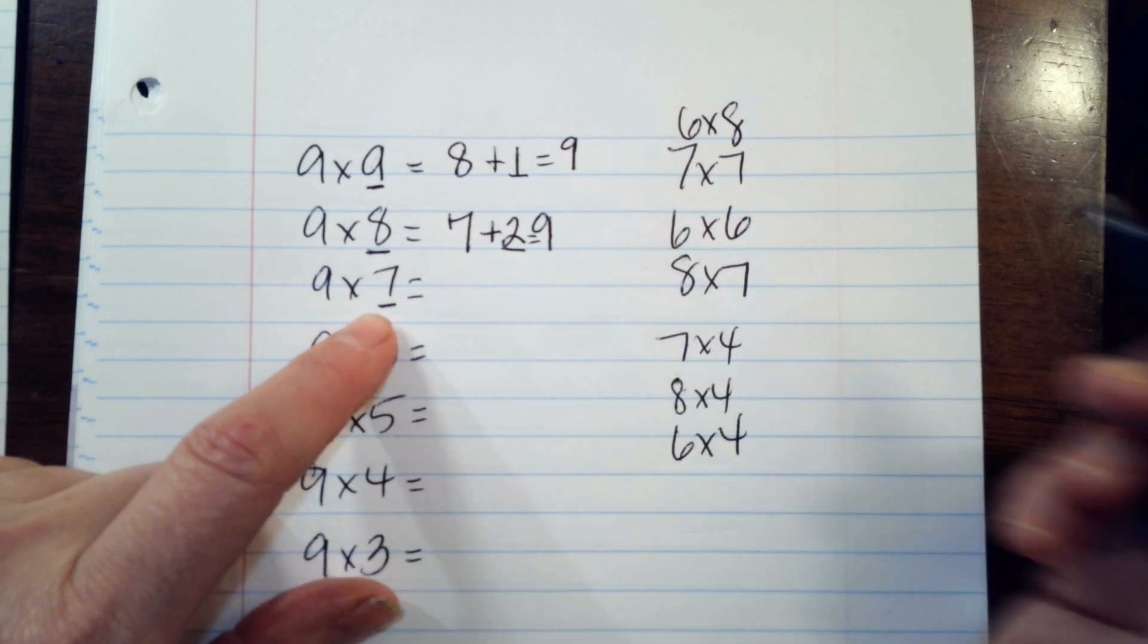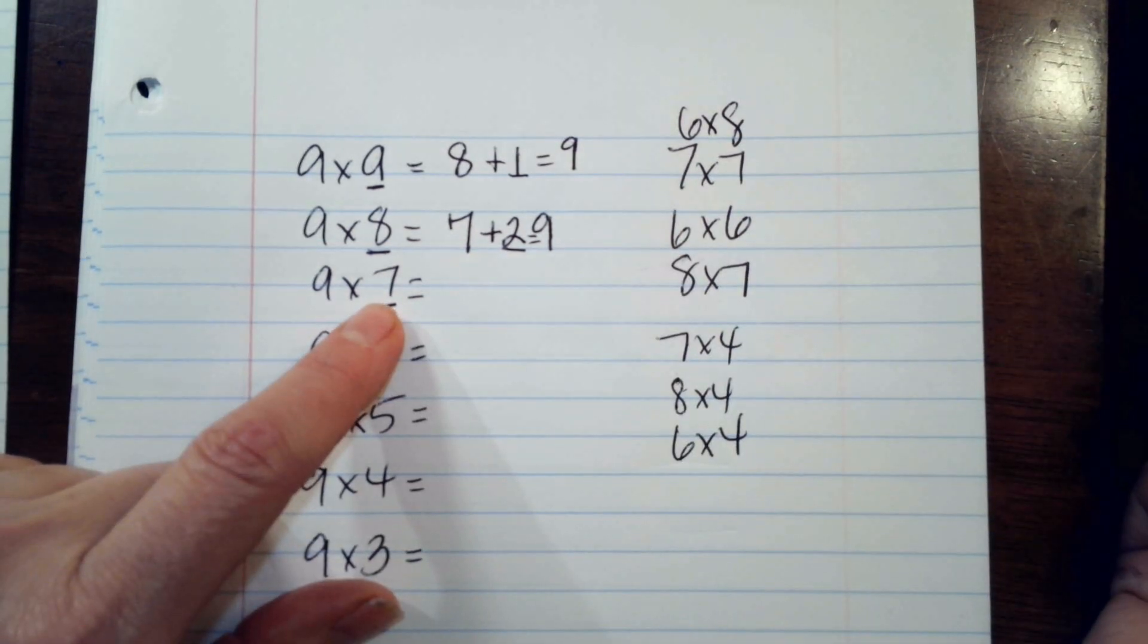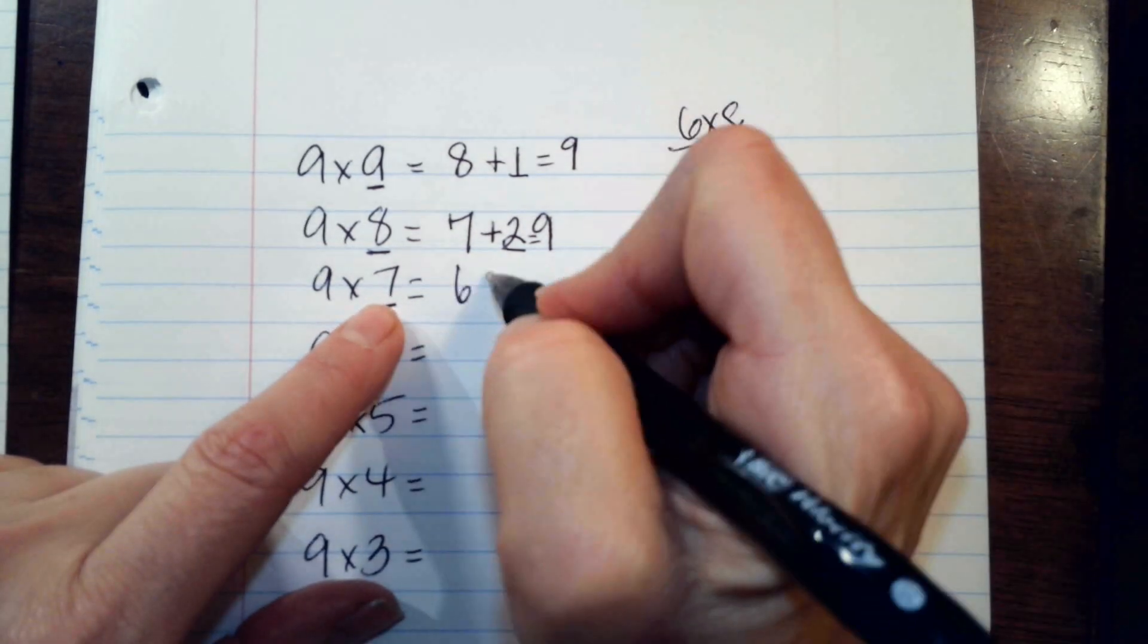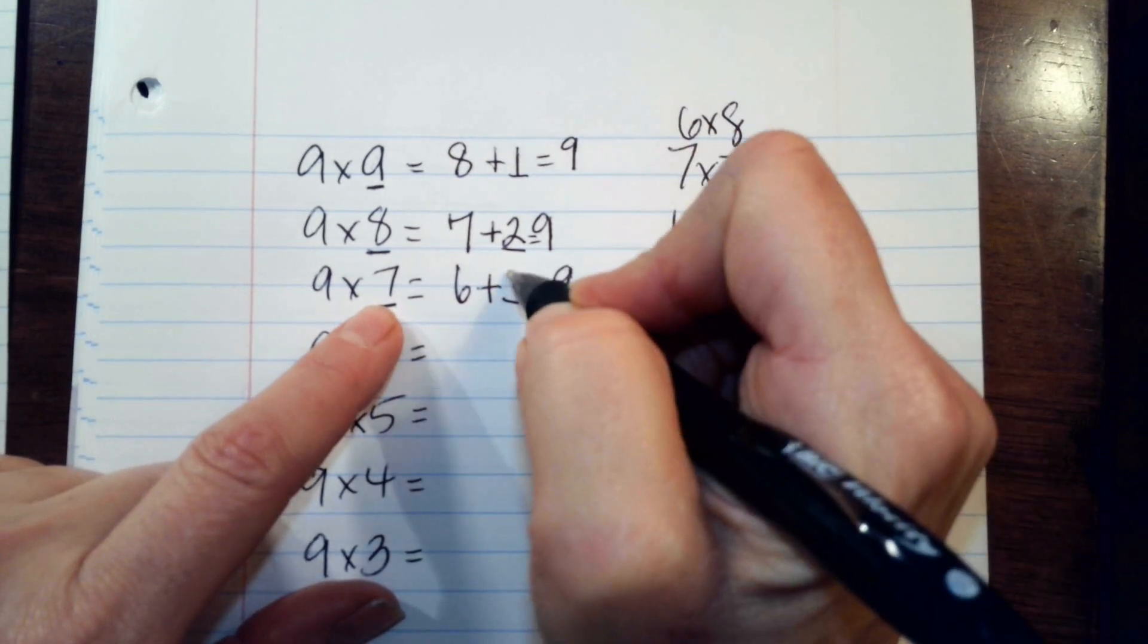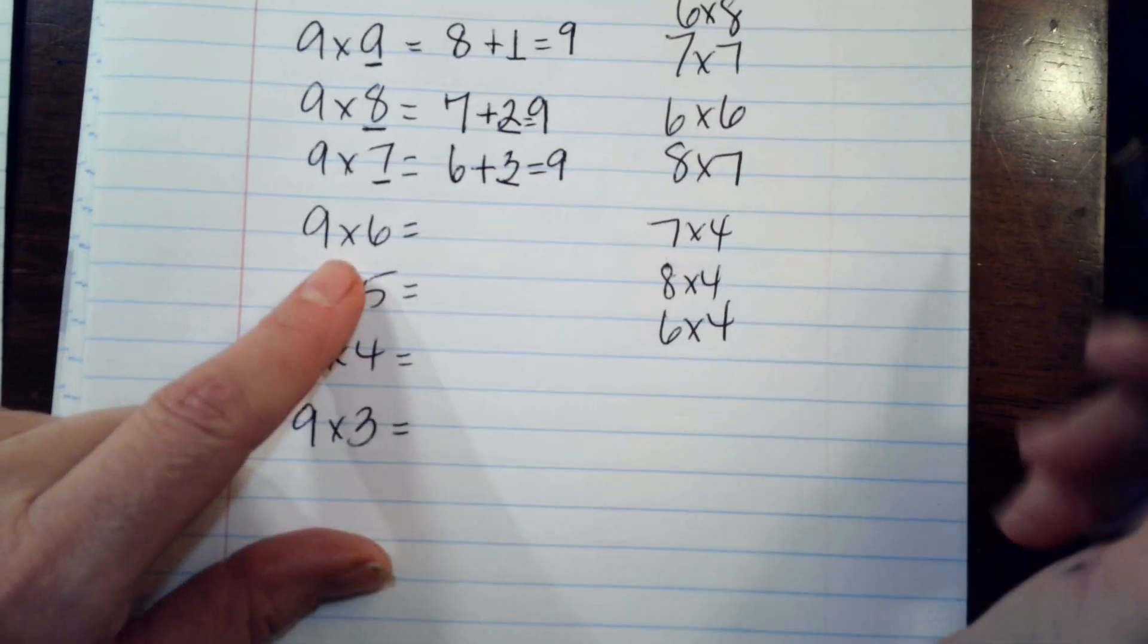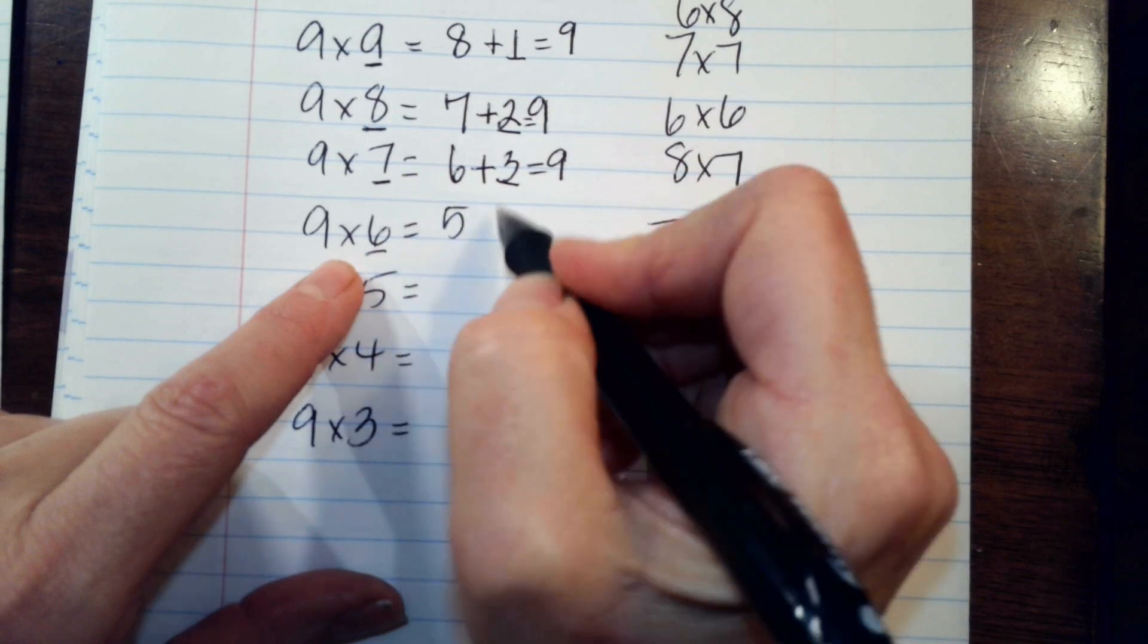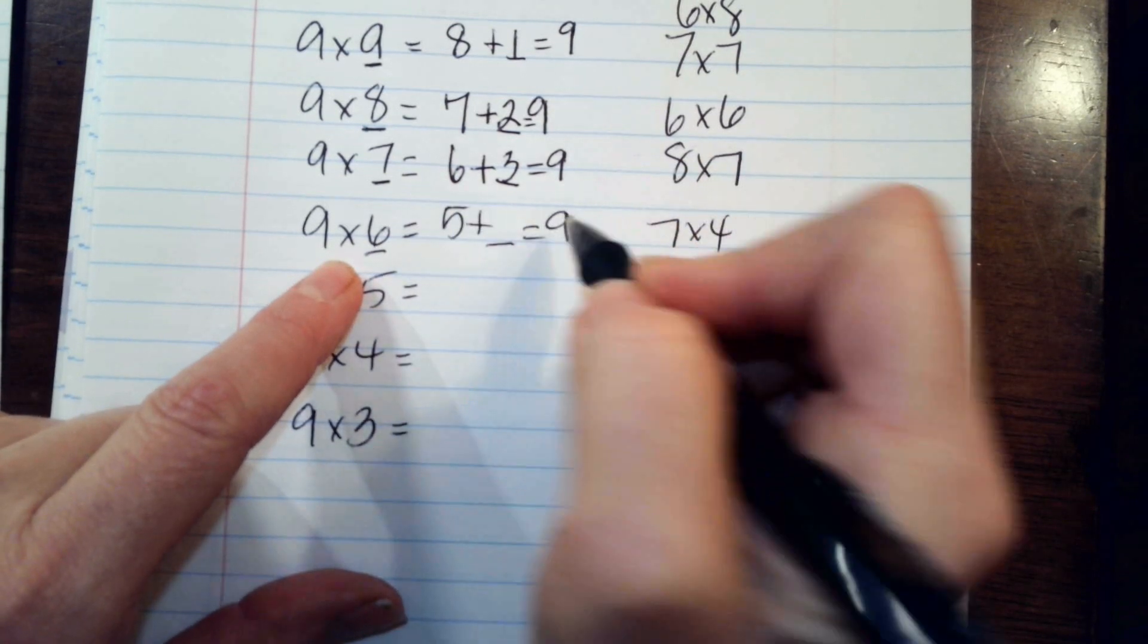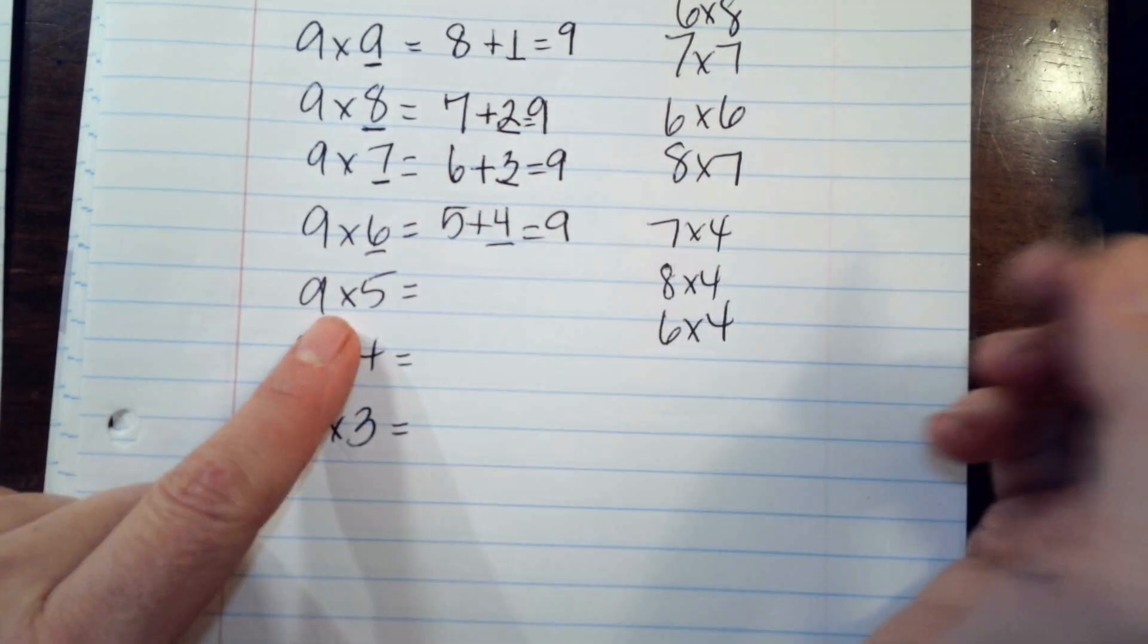This one is, first digit, six, plus something, three. One less is five, plus something equals nine, four. Fifty-four. Yep.